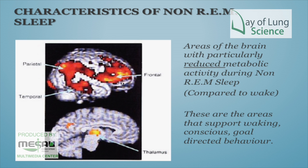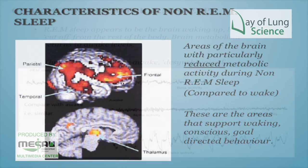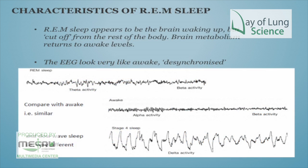The characteristics of non-REM sleep show activity in the parietal lobe, frontal lobe, temporal lobe, and the thalamus. The different wave types are: alpha waves, theta, beta, and delta.